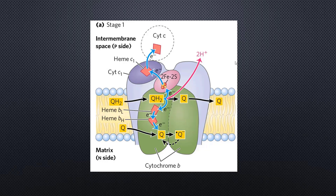That molecule is generated by complex 1 and also complex 2 — these are the sources of the generation of ubiquinol. We will be talking about complex 1, complex 2, and complex 4 later in separate videos. Now ubiquinol traverses through the lipid bilayer of the inner mitochondrial membrane.